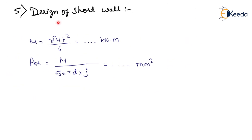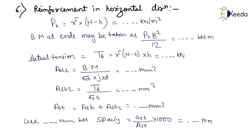Step 5: Design of short wall. Reinforcement in vertical direction: M equals gamma H into h² divided by 6, in kilonewton-meter. Calculate AST equals M upon (sigma ST into D into J), in mm². Next, reinforcement in horizontal direction.